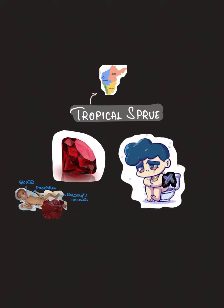Coming to the pathogenesis: since there is malabsorption taking place, whatever the person eats is going to come out, so the person will have severe diarrhea. Due to diarrhea, the normal flora is disturbed and replaced by pathogenic bacteria like E. coli, which is the most common one present.